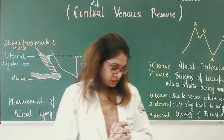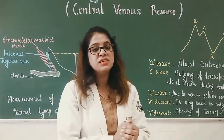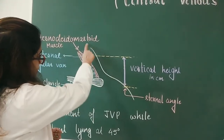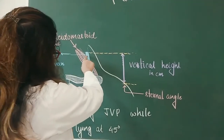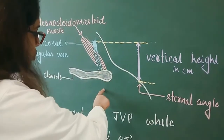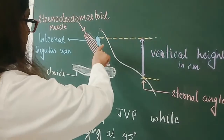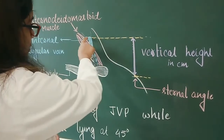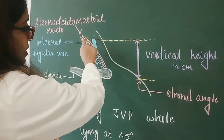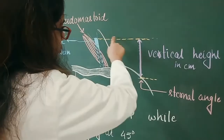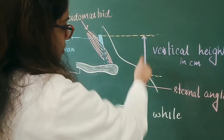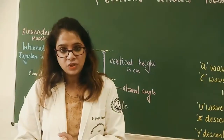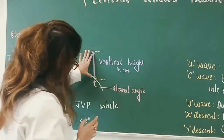We measure the vertical height from the sternal angle. When the patient lies at 45 degrees, we measure the height of the wave visible in the internal jugular vein and measure the vertical height from that level to the sternal angle. The sternal angle is about five centimeters from the right atrium, so we add five centimeters to that height — giving us: measured height plus five centimeters.